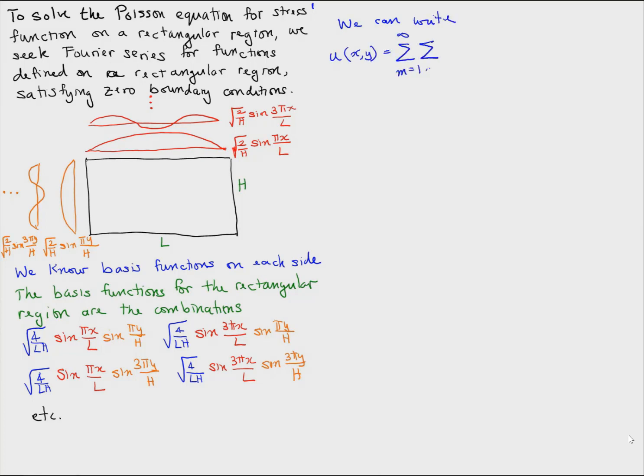So we can write for example the membrane deflection as the sum m equals one to infinity, n equals one to infinity, a sub mn, so the coefficients are indexed by m and n now, times the sines in the x direction times the sines in the y direction. This is called the double Fourier series.